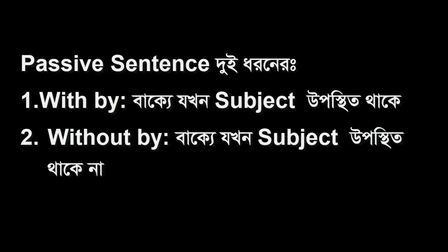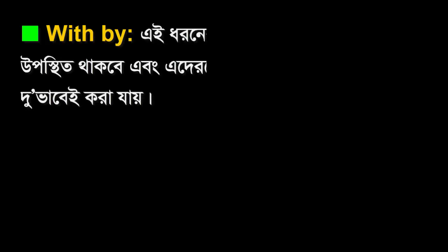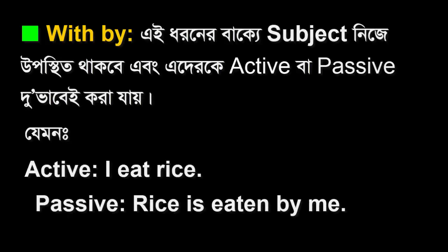Passive Sentence with-by: the subject remains in its place and the active sentence can be made in two ways. With-by, the subject stays in its position and the active sentence is converted into two forms.